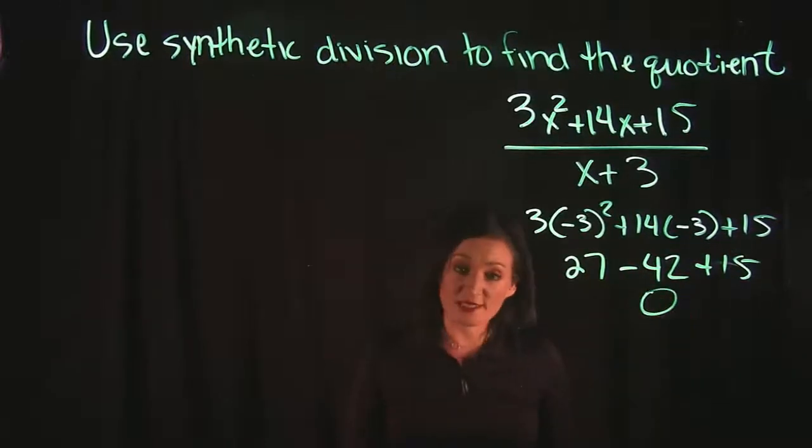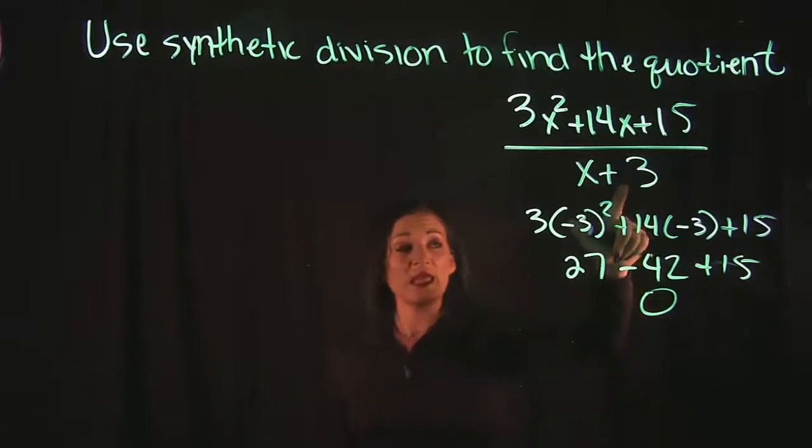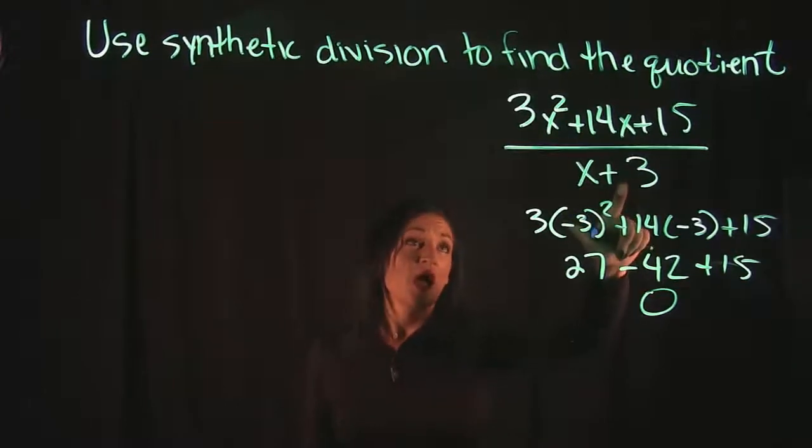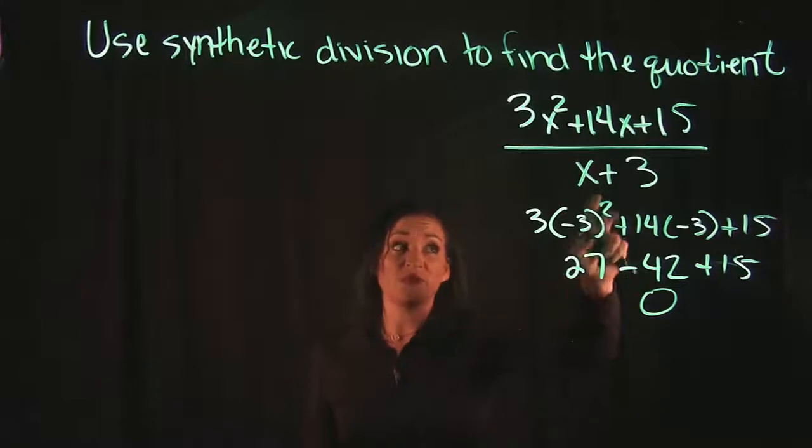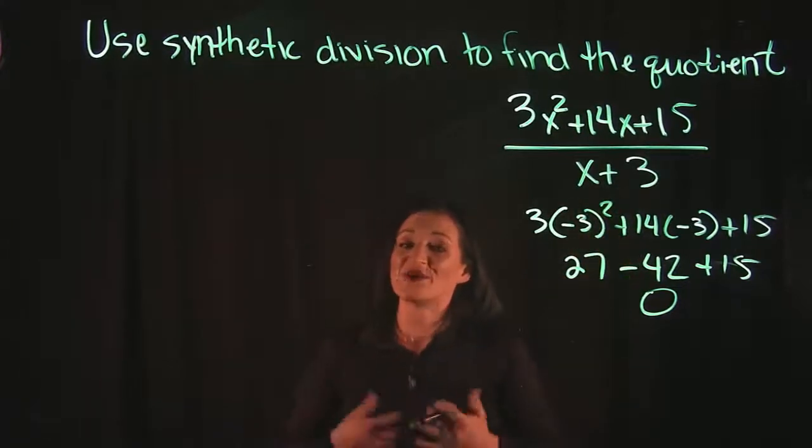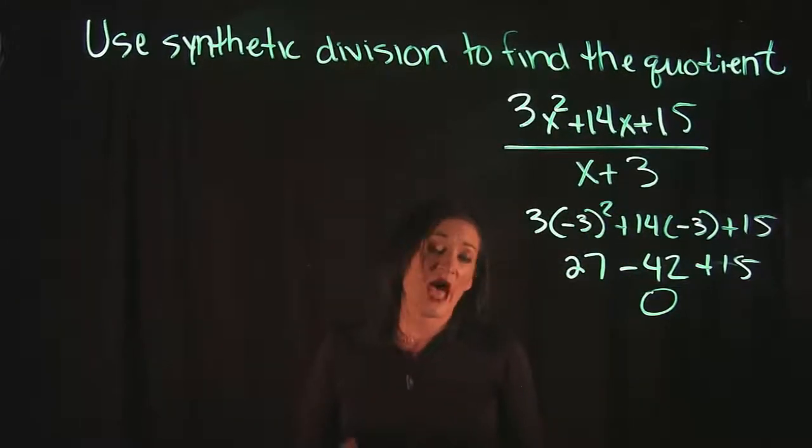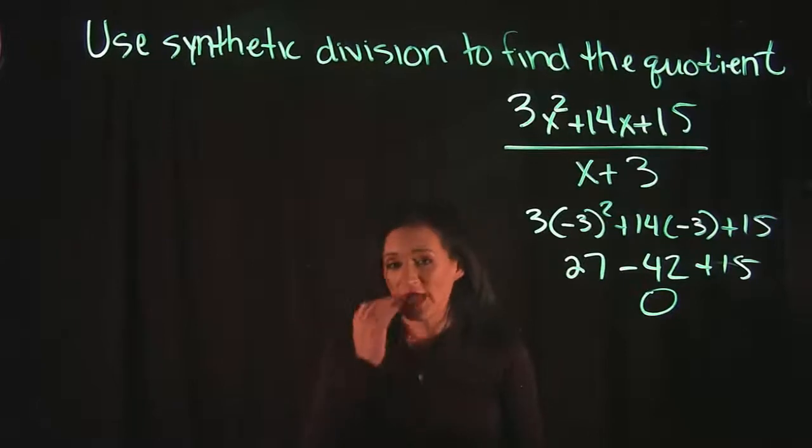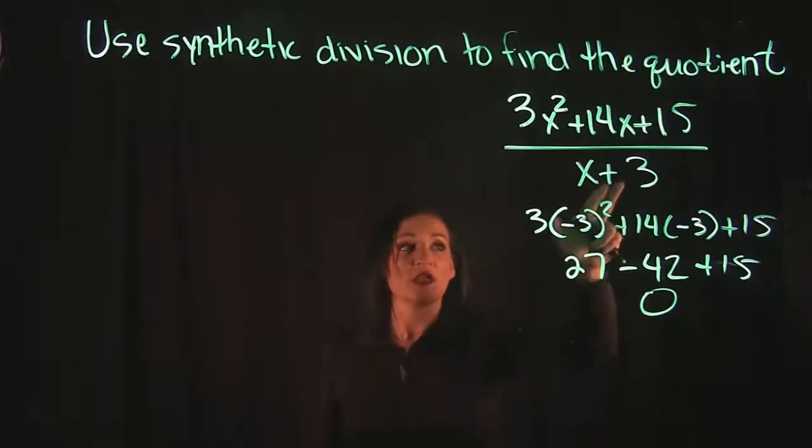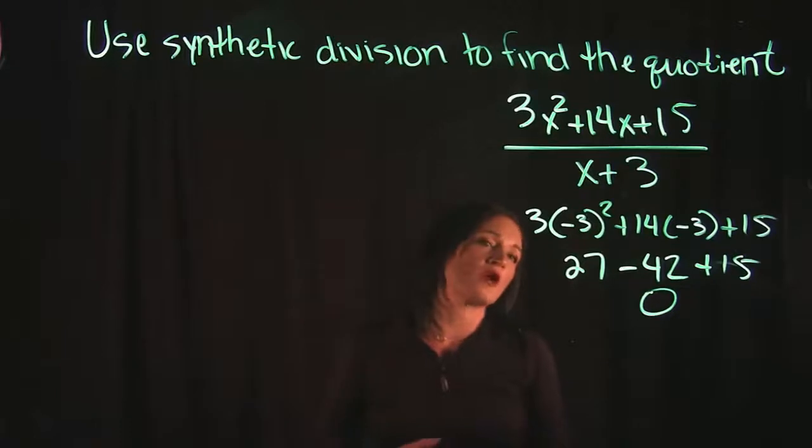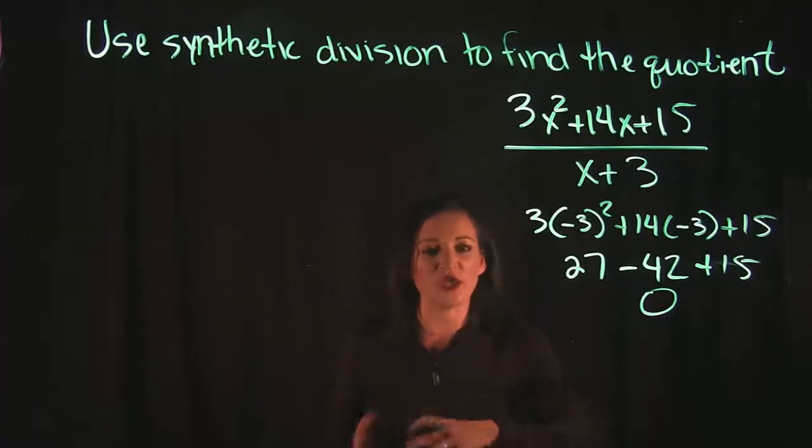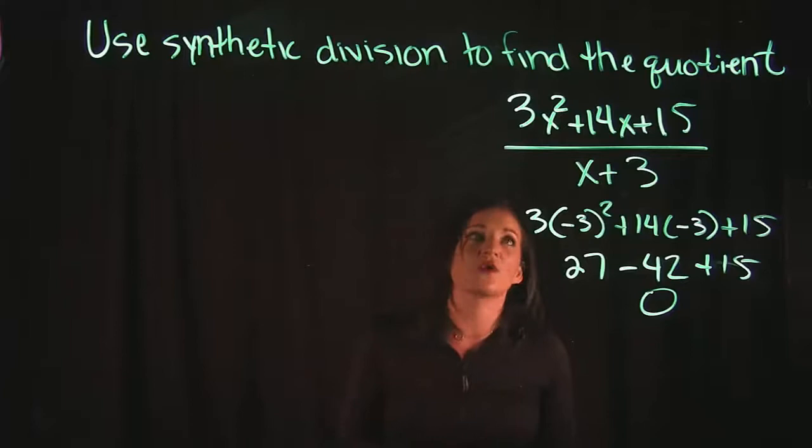So when you plug in the opposite number of your divisor into your numerator, if you get a 0, that means it is going to be divisible. It's going to divide out evenly, you're not going to have a remainder. So that's how you know if you have a remainder or not. I take the opposite number in your divisor, plug it in for x into your numerator. So otherwise, whether we're asked to do synthetic division or whether we are trying to take a cubic, fourth, fifth power equation and lower it in its power, regardless, we are going to now have to do synthetic division.